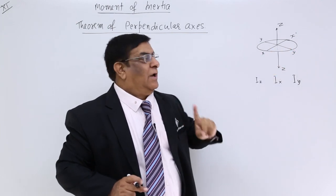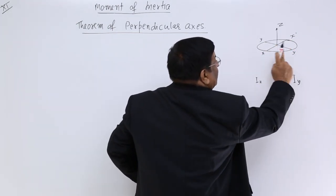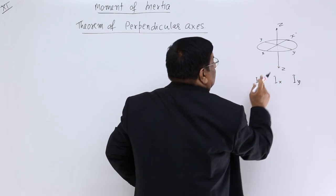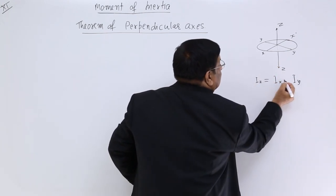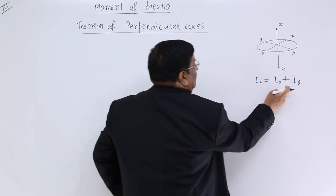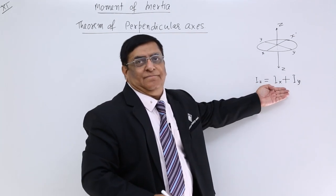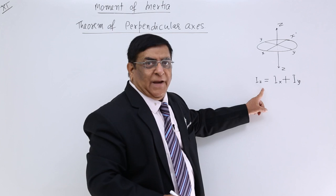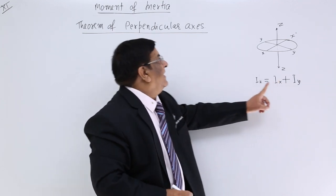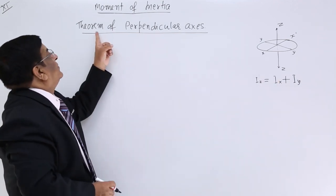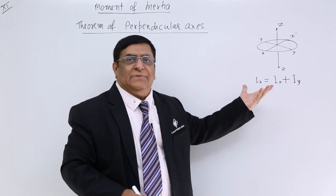The relation is: when rotating about the axis perpendicular to the plane, that moment of inertia is equal to the sum of the other two moment of inertia. Since that axis is perpendicular to the plane and perpendicular to both the other axes, this is known as the theorem of perpendicular axis.